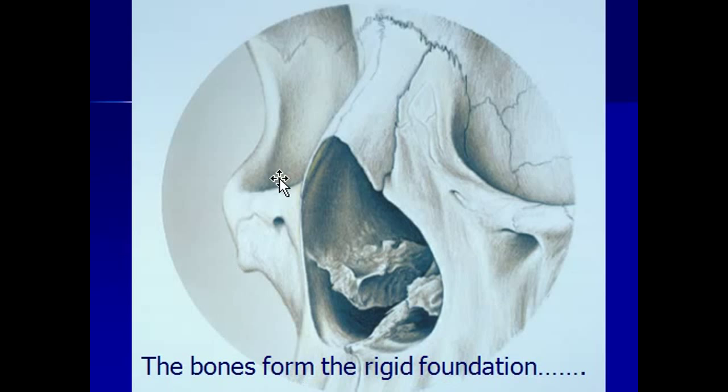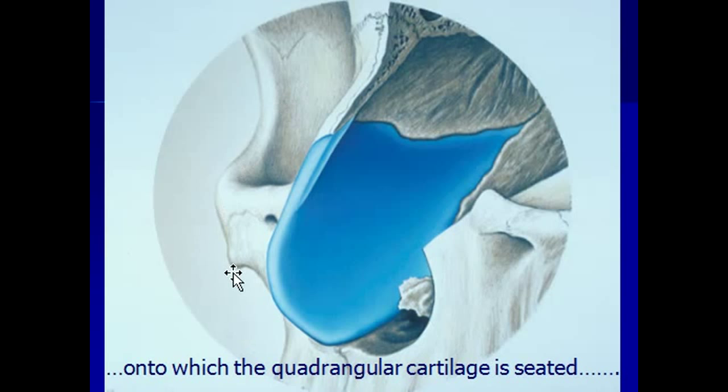So the bones form this rigid foundation, but seated within the bones is this very strong cartilaginous wall, which is the nasal septum. The septum you can see extends all the way up to the bridge of the nose and down between the nostrils.